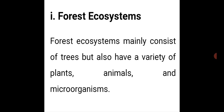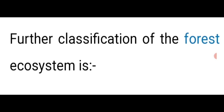Forest ecosystem mainly consists of trees but also has a variety of plants, animals and microorganisms. Forest ecosystems have an abundance of flora and fauna — they have a large number of organisms living in a relatively small space. Therefore, the density of living organisms is quite high. A small change in this ecosystem could affect the whole balance, bringing down the whole ecosystem.